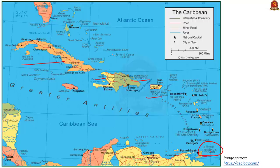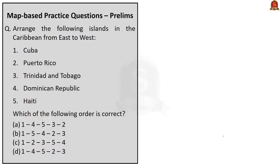So the east to west arrangement is Cuba, Haiti, Dominican Republic, Puerto Rico, and Trinidad and Tobago. The correct option is option B: 1, 5, 4, 2, and 3.